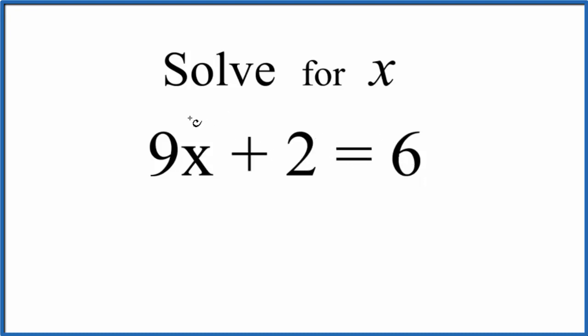So we could try to guess. We could put 2 in for x. 9 times 2, that's 18. 18 plus 2 is 20. That doesn't equal 6. And eventually we might figure it out, but it's probably easier just to use some algebra here.